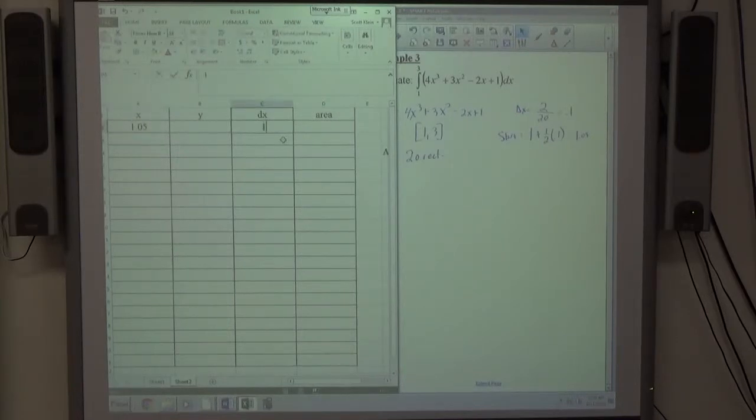And delta x is 0.1, and y equals—now this is 4x cubed, so it's going to be 4 times, and then click on A2 and then carat 3, plus 3 times, click on A2, carat 2, minus 2 times, click on A2.